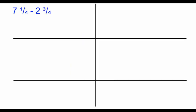Okay, here's our next problem. We have 7 and 1 fourth minus 2 and 3 fourths. The problem with this question is that our first fraction, 1 fourth, is smaller than our second fraction, 3 fourths.